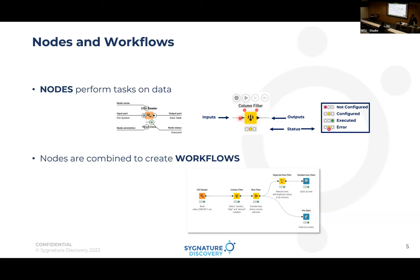A node has different parts: what goes in is called the input, and what comes out is the output. If I want a column filter node, I give it some Excel, CSV, or TSV data, and then filter it — there might be 100 columns but I need only two. Those two columns go out from that node as the output.